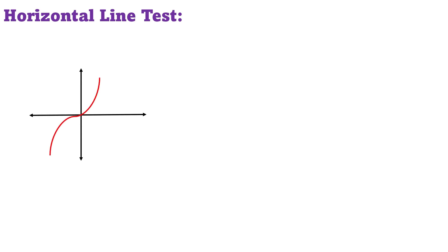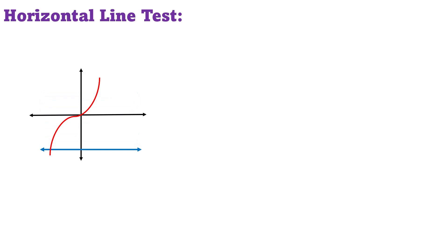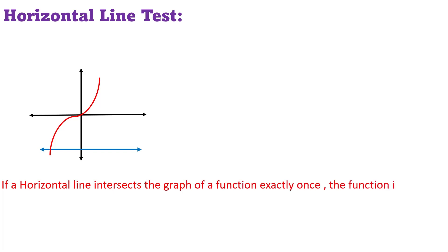The horizontal line test is used to check whether a function is bijective or not. We take the graph of a certain function and draw a horizontal line. Here we see that the horizontal line intersects the graph in only one point. We can move the horizontal line anywhere in the graph and it still intersects the graph in only one point.